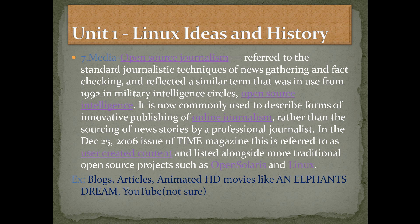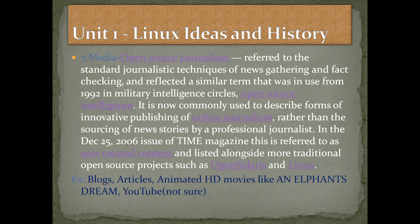Open source journalism refers to standard journalistic techniques of news gathering and fact-checking, and reflected a similar term in use from 1992 in military intelligence circles — open source intelligence — meaning sharing intelligence, sharing media, not just restricting it to yourself, but sharing it with others so that they can also share with you what you don't know. It is now commonly used to describe forms of innovative publishing of online journalism, rather than the sourcing of news stories by a professional journalist. Best examples are blogs, articles, and animated high-definition movies like An Elephant's Dream, and YouTube.